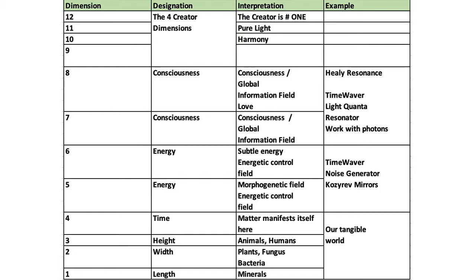According to the Borchardt-Heim model, our universe consists of 12 dimensions. This has been mathematically proven. When using the Healy resonance, the quantum sensor in the Healy does the analysis in dimensions 7 and 8, which are superior to the height, width, length, and time of the first four dimensions.